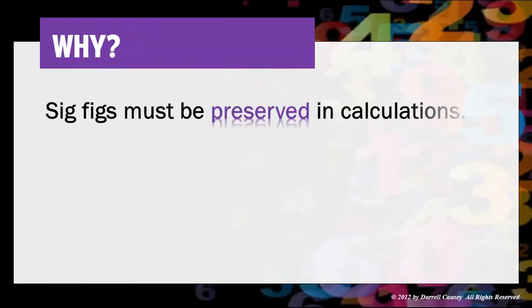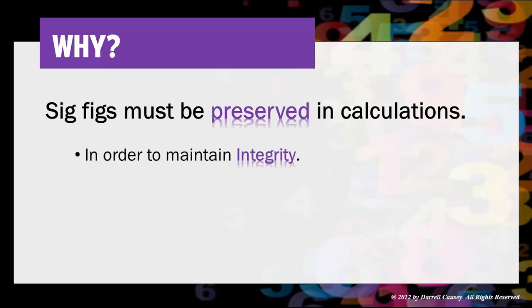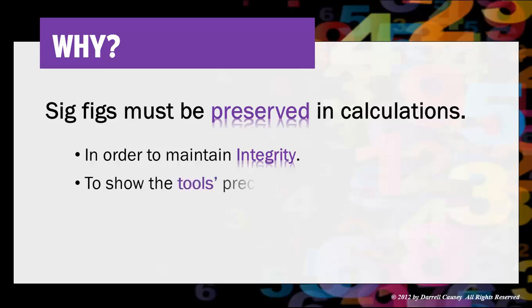Why use sig figs? Sig figs must be preserved in our calculations. We must maintain their integrity and show how precise our tool is. In mathematics it's not a big deal where the decimal point is, but if you've been through the sig figs video you know that 200 and 200.0 are not the same thing to a scientist. We want to preserve our calculations and our measurements by using the proper system.